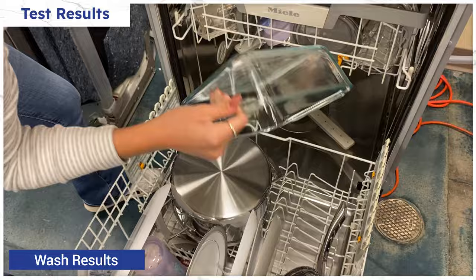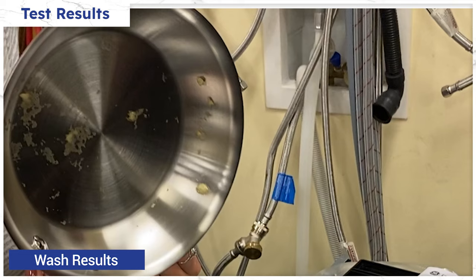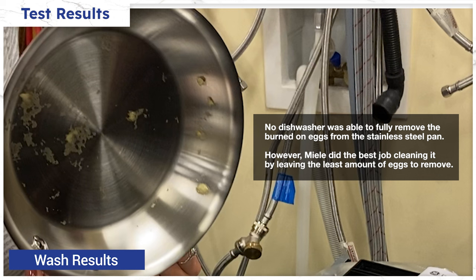Other than the pan with burned-on eggs—by the way, no dishwasher was able to fully clean this pan in our experiments—but Miele did do the best job, leaving it with the least amount of eggs and residue to manually clean off after the wash.